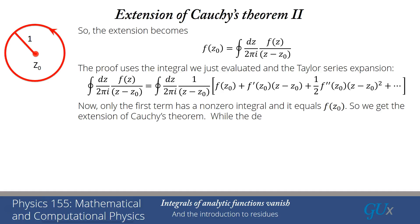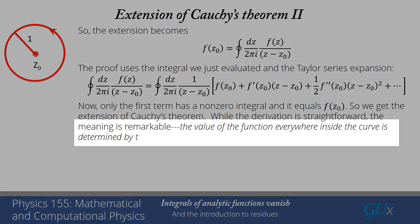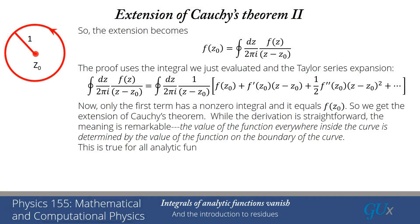This immediately gives us the proof of the second form of Cauchy's theorem. While the derivation was straightforward, the meaning is really remarkable: the value of the function everywhere inside the curve is determined by the value of the function on the boundary. If you give me the values of the function along some boundary, I can tell you the value at every interior point. This is true for all analytic functions—a truly powerful result.